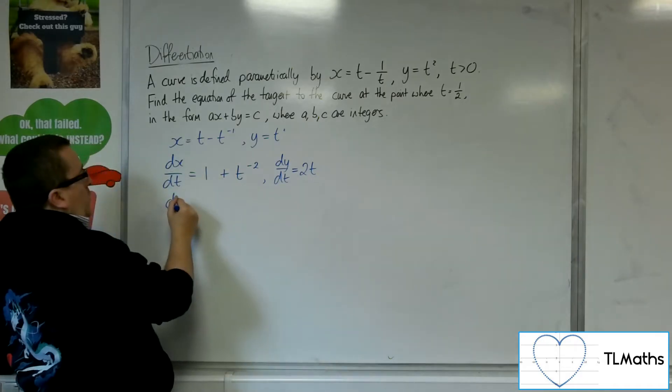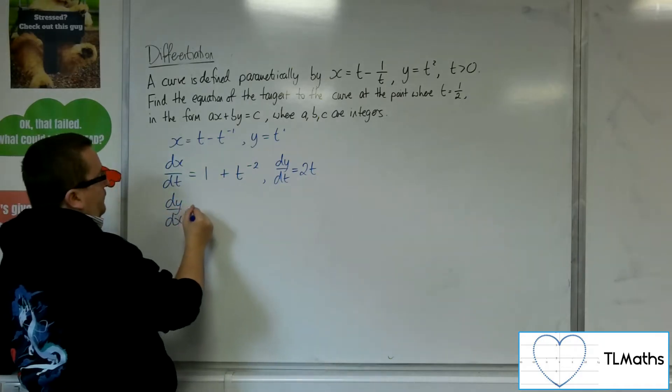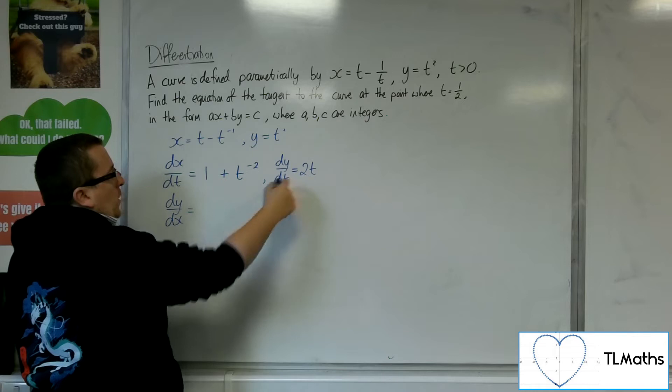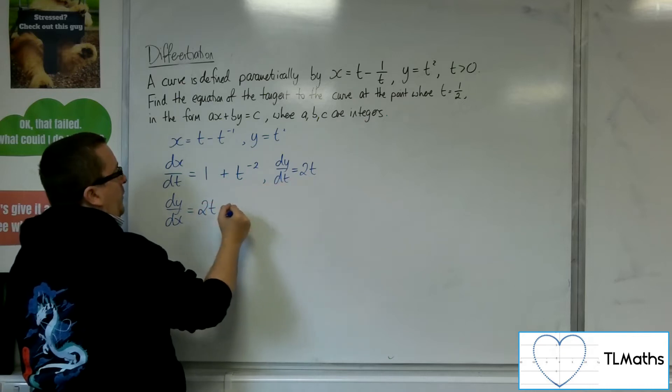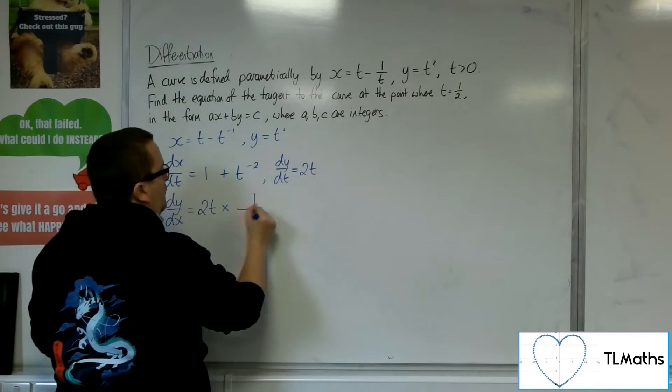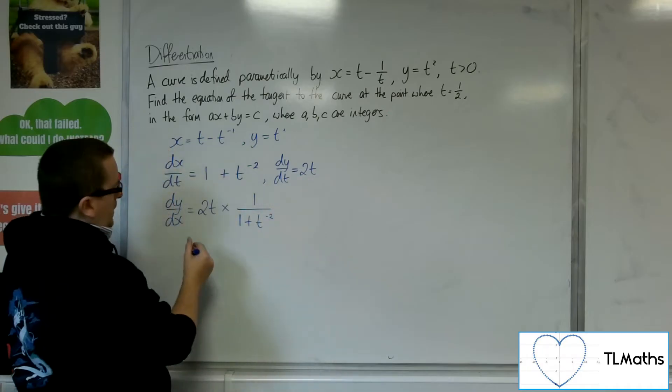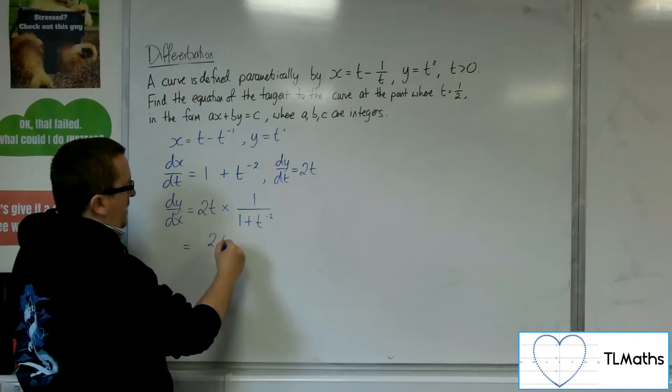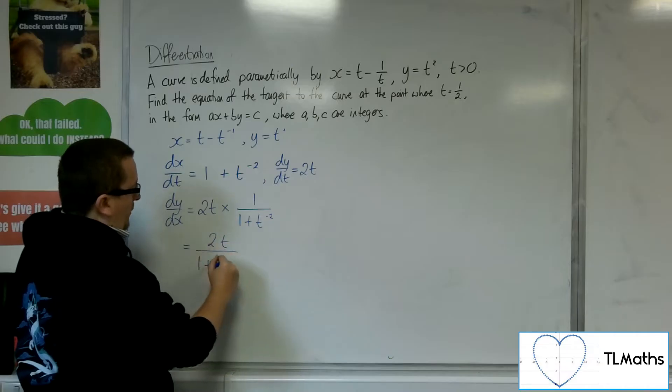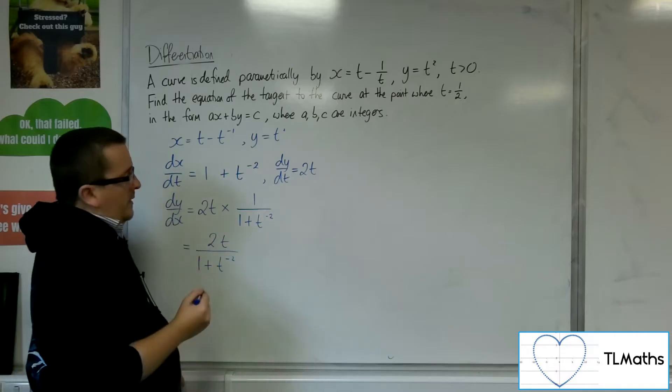So, dy by dx is equal to dy by dt times by dt by dx. So, 1 over 1 plus t to the minus 2. So, that's equal to 2t over 1 plus t to the minus 2.